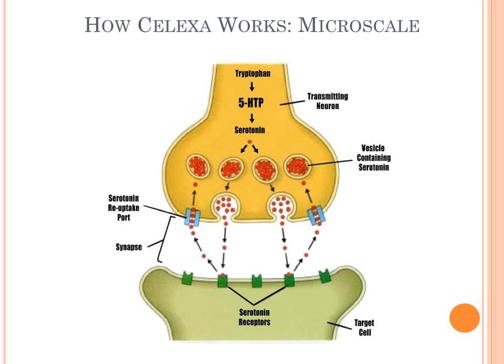Here is an image to help depict how SSRIs work on the microscale, showing a synapse. In a normal healthy synapse, serotonin exits the presynaptic neuron into the synapse and binds to a postsynaptic receptor. This binding triggers a reaction in the postsynaptic neuron, leading to the cognitive effects of serotonin — usually associated with an elevated mood. After that reaction, serotonin detaches from the receptor and floats around in the synapse, then is taken back into the presynaptic cell via the serotonin reuptake port.